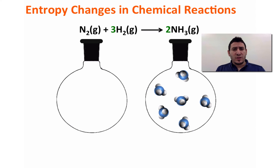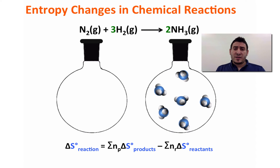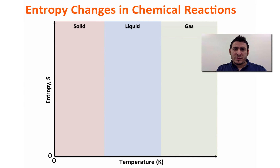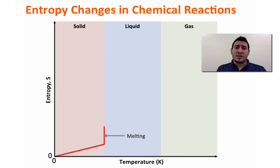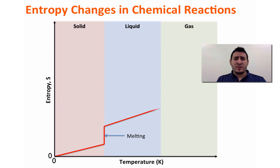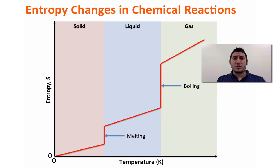Entropy is a state function and can be measured by the following expression: ΔS° reaction equals the sum of the entropy of the products minus the sum of the entropy of the reactants. Since the entropy of a perfect crystal at zero Kelvin is zero, an increase in temperature leads to an increase in entropy until we reach the melting point, where entropy increases dramatically due to the phase change from solid to liquid. With a continuous increase of temperature, entropy continues to increase until the boiling point, where entropy again increases dramatically due to the phase change from liquid to gas, and further temperature increases result in further entropy increases.